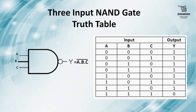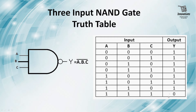Let us have a brief look at the schematic and the truth table of a three input NAND gate. This is the symbol of a three input NAND gate where A, B, C are inputs and Y is the output, and Y equals A dot B dot C complement. In simple words, the output is the inversion of an AND gate. If we look at the truth table, if all the inputs or any of the inputs are 0, the output is 1, and when all the inputs are 1, the output is 0. We will check this truth table in the practical demo.